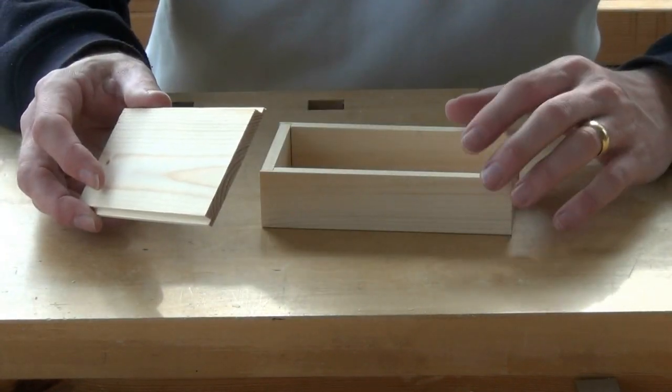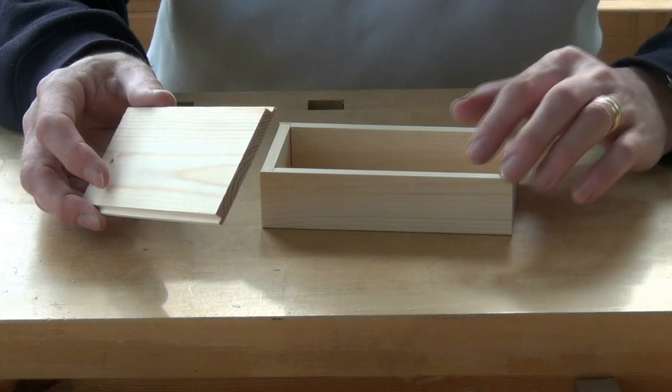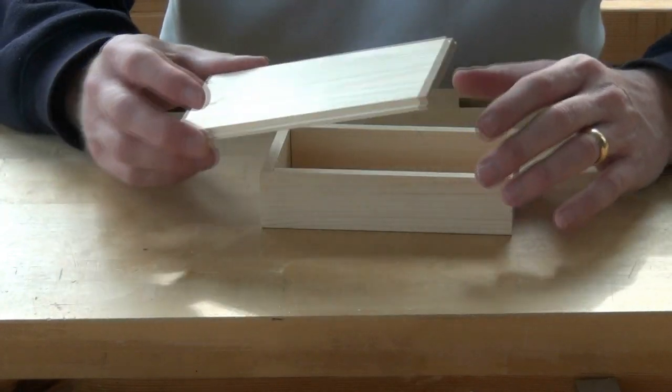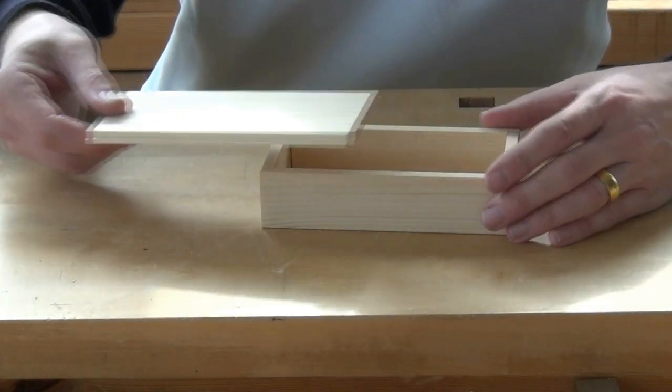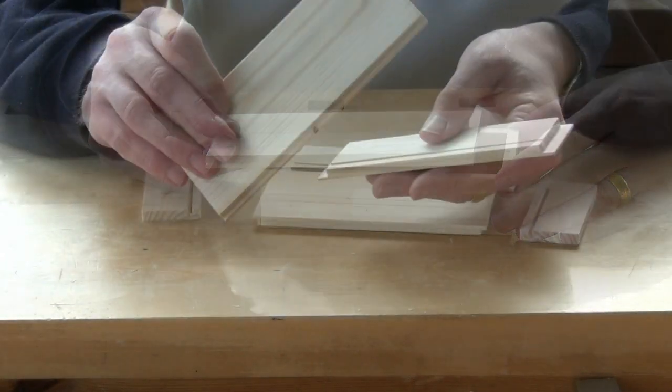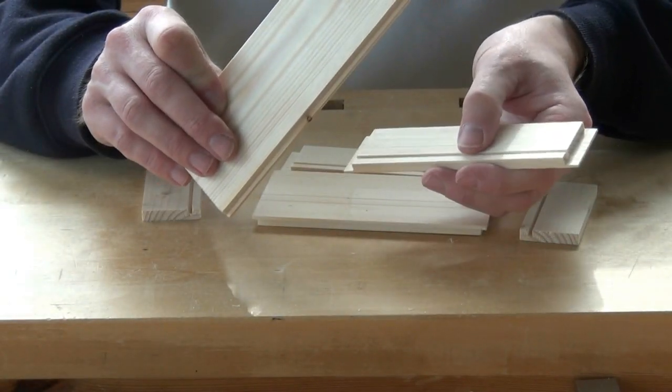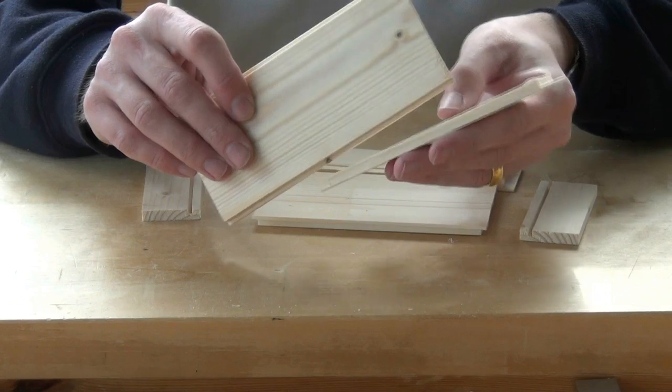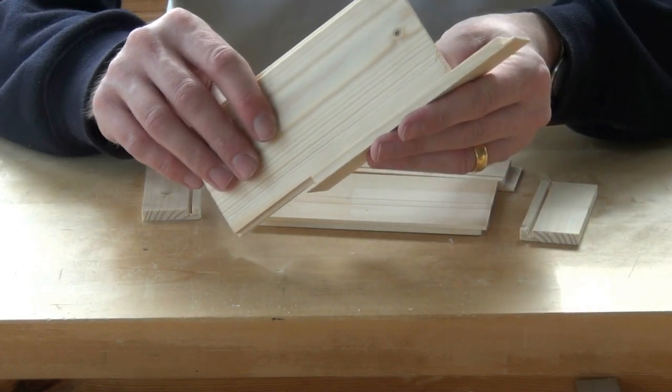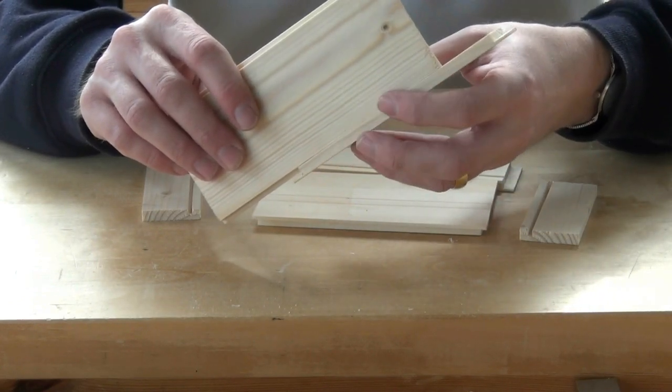What we're going to do now is mark for and cut some grooves in the sides of the box so that we can slide the top in from one end. When we made the grooves for the base, we positioned them so that the panel would be flush with the bottom of the box.